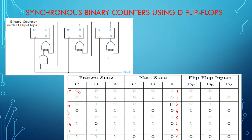For flip-flop C: present state is 0 and I want the next state to be 0, so the data input DC is 0. Present state is 0 and next state is 0, so DC is 0 again. Present state is 0 and next state is 0, so DC is 0. Present state is 0 and next state is 1, so DC is 1. Present state is 1 and next state is 1, so DC is 1. Present state is 1 and next state is 1, so DC is 1. Present state is 1 and next state is 1, so DC is 1. Present state is 1 and next state is 0, so DC is 0.